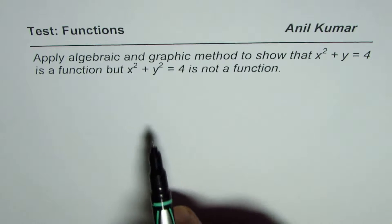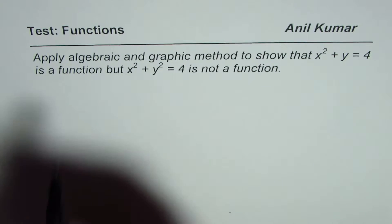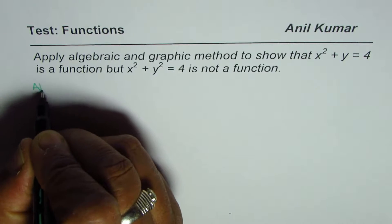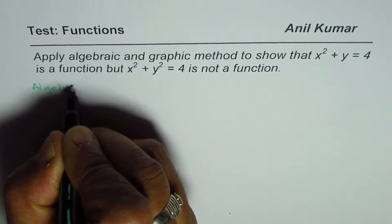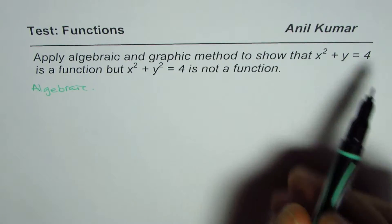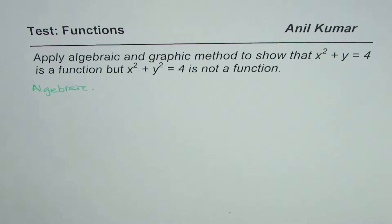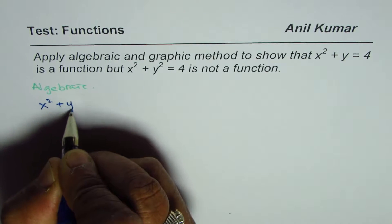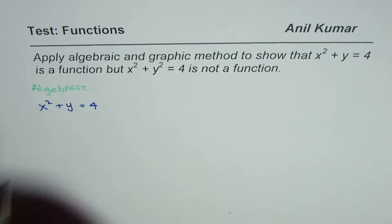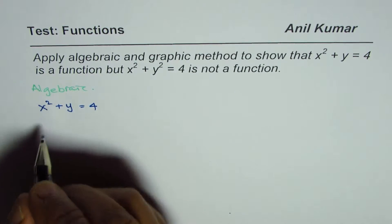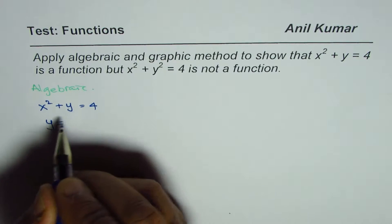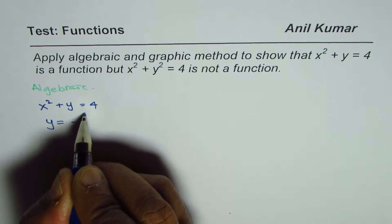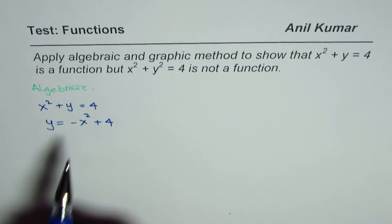Let us first do algebraic method to show that x² + y = 4 is a function. We could isolate y. If I do that we get y = -x² + 4.